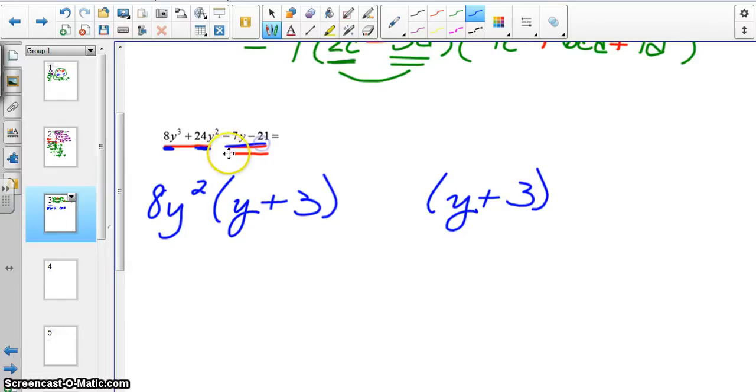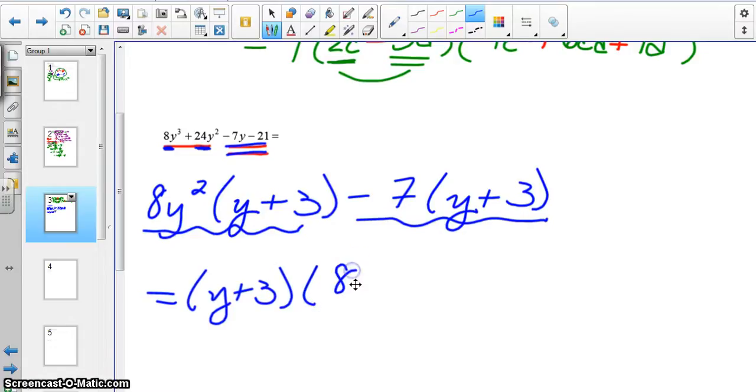Now if grouping is going to work, this second part better have a y plus 3 in parentheses. Can you think of something I could pull out of those two terms that would leave me with y plus 3? If you said minus 7, you are correct. And then I think of this as a term and I think of this as a term. And both of those terms have y plus 3 in common. So that's a greatest common factor. And my leftovers would be 8y to the second minus 7.